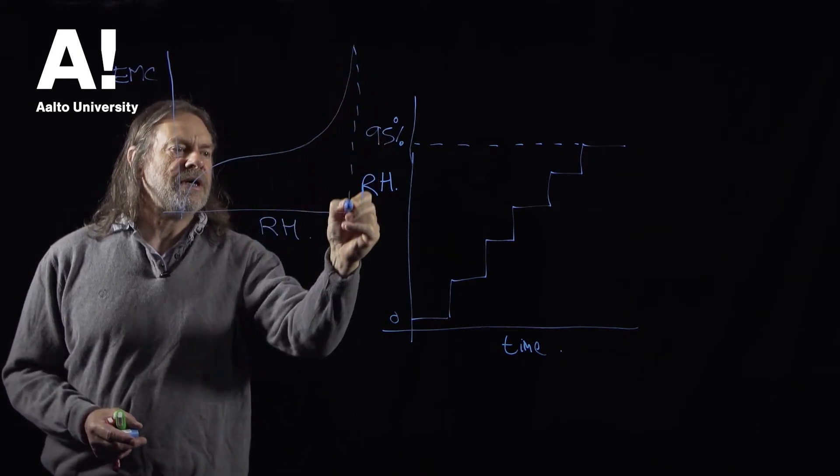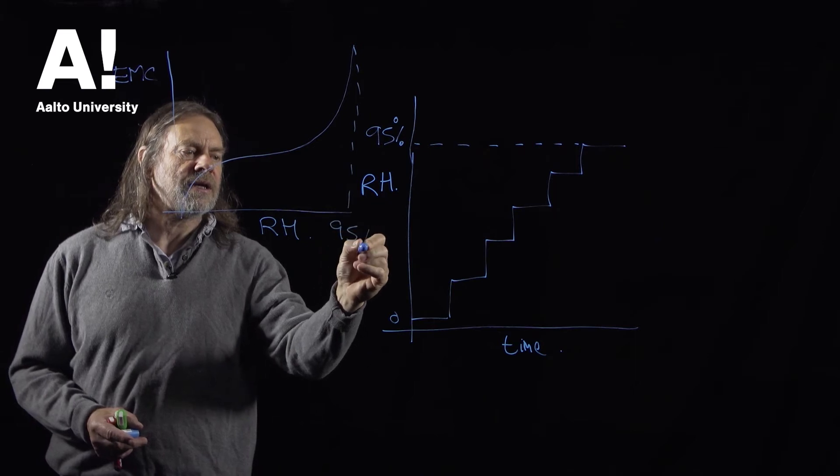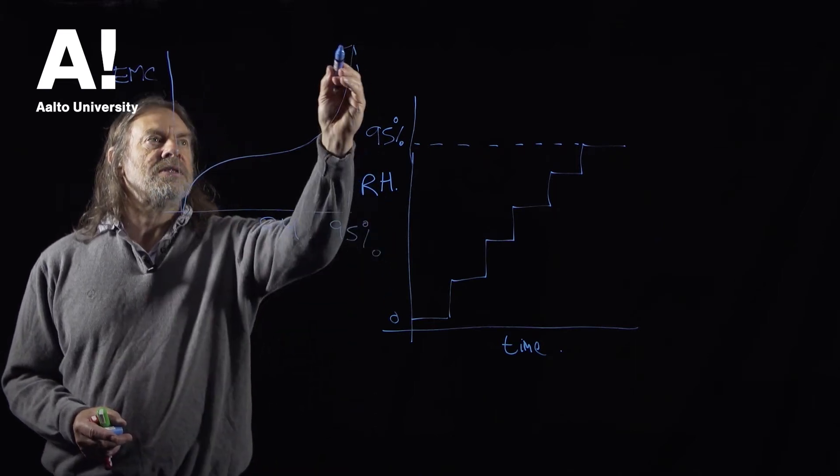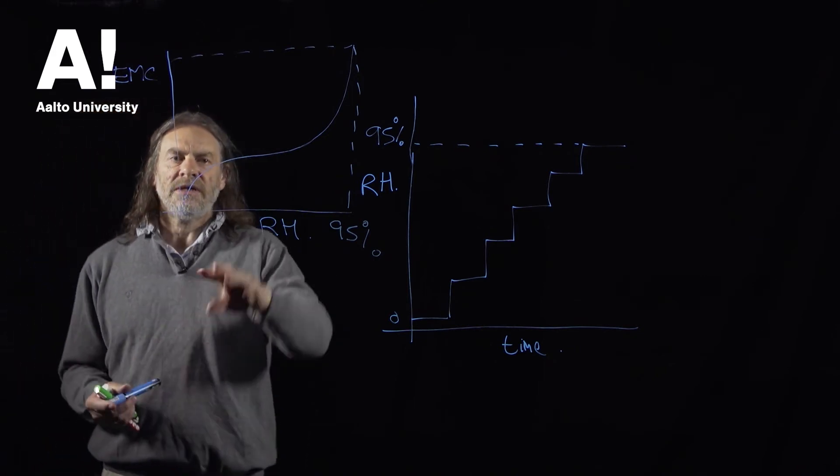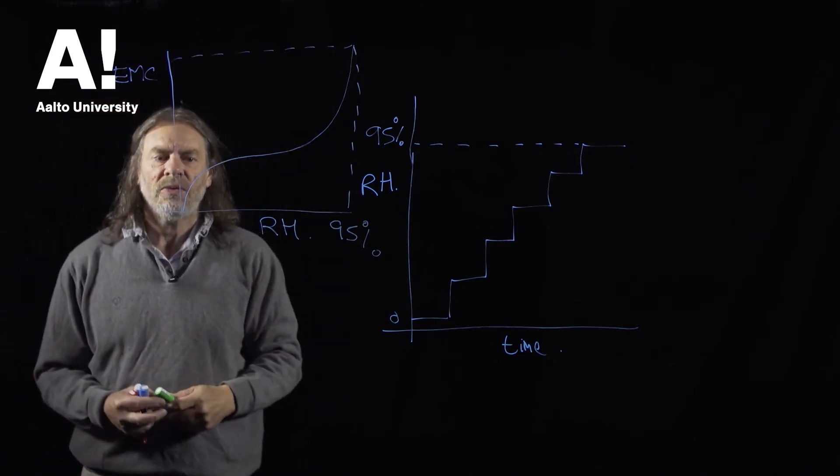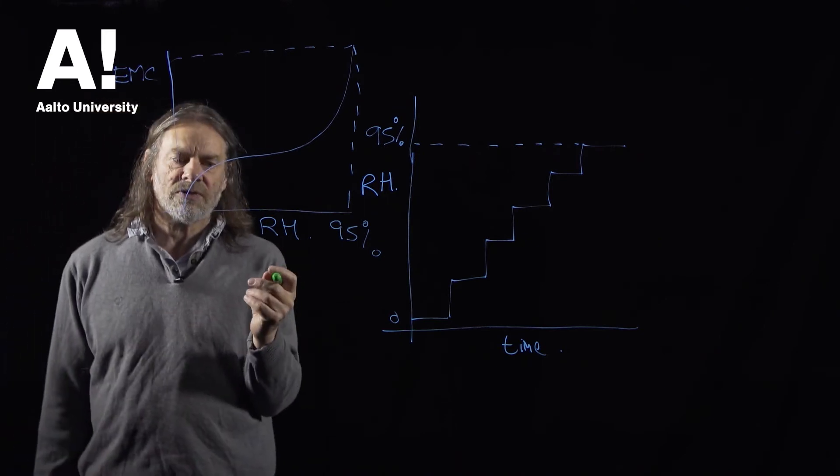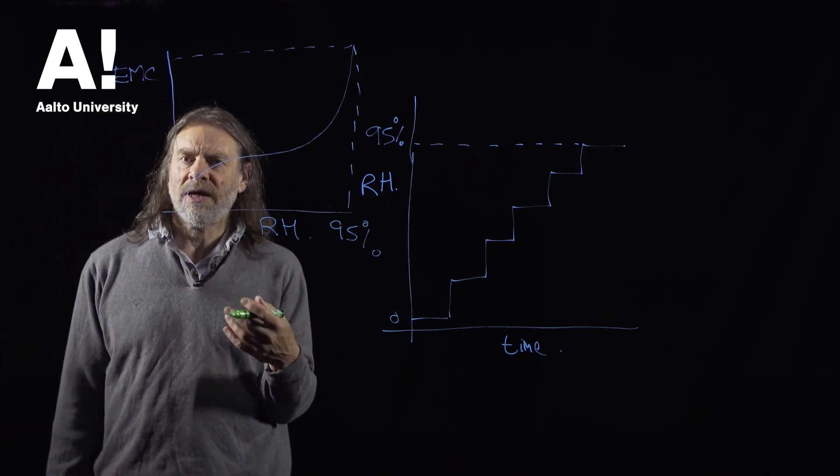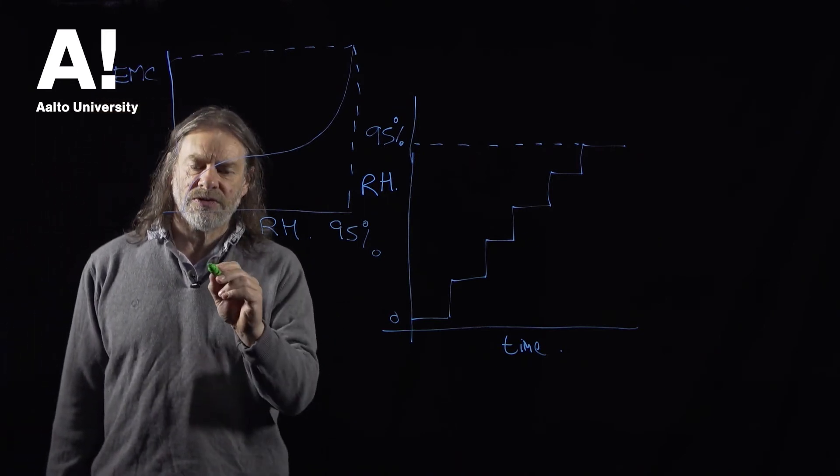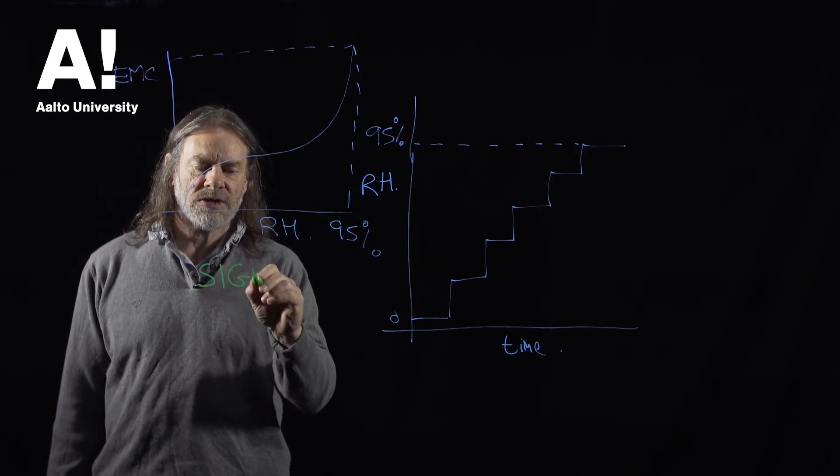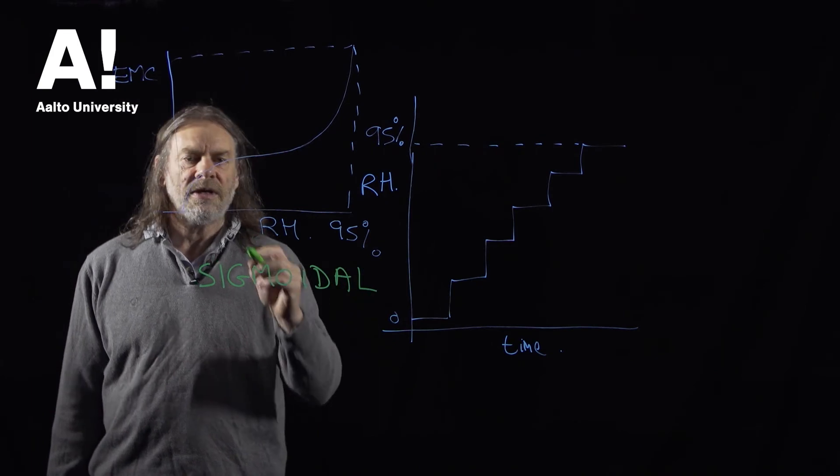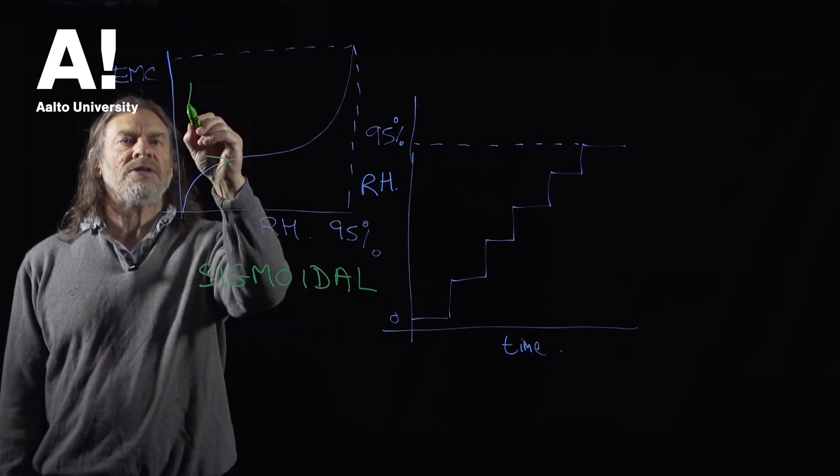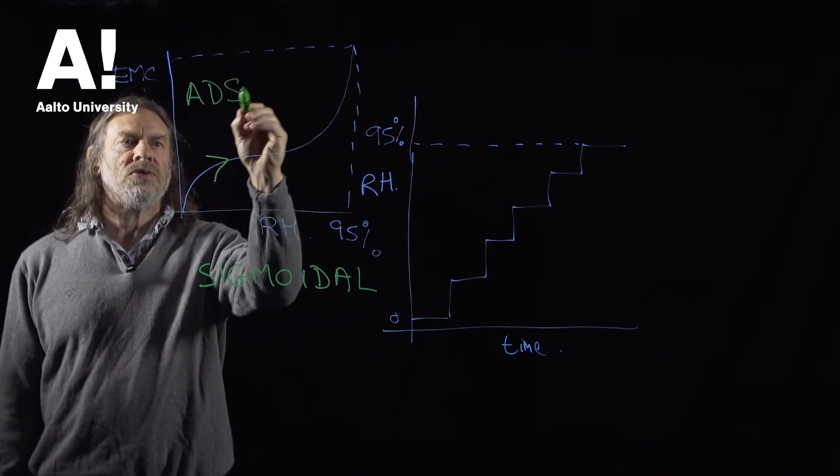So that's 95% there and that's the equilibrium moisture content at 95%. That is a particular curve which is observed always with wood and with many other natural materials and that's referred to as a sigmoidal curve. And this is the process of adsorption.